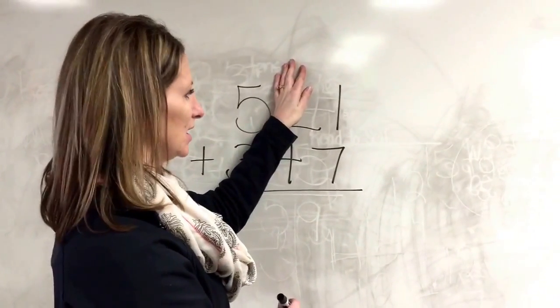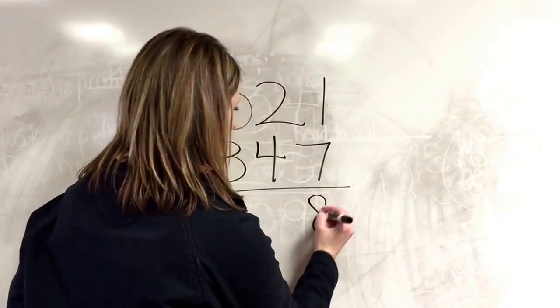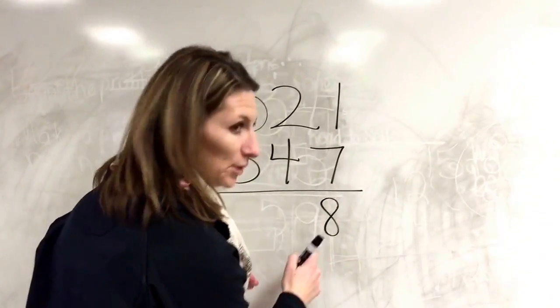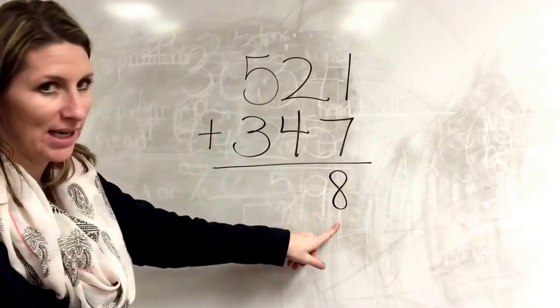that one plus seven is eight. And nine and below stay low, so I'm gonna write my eight right down here.